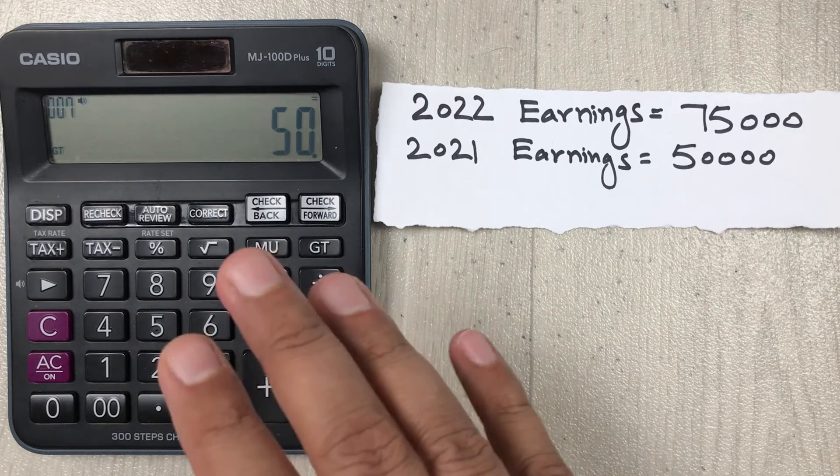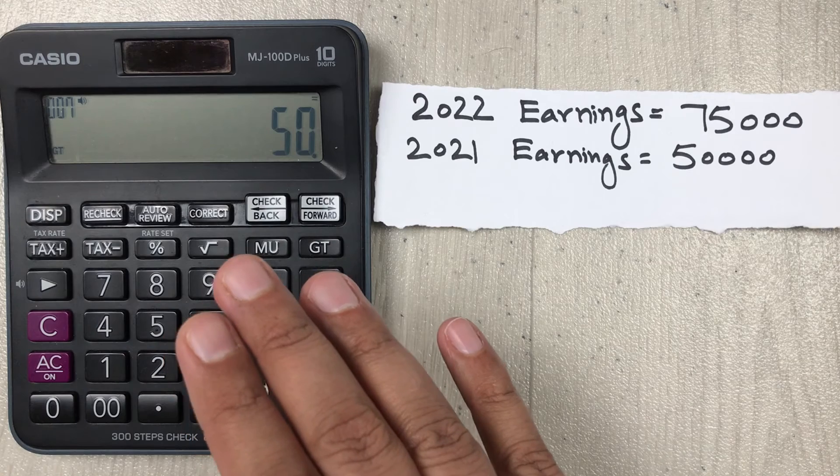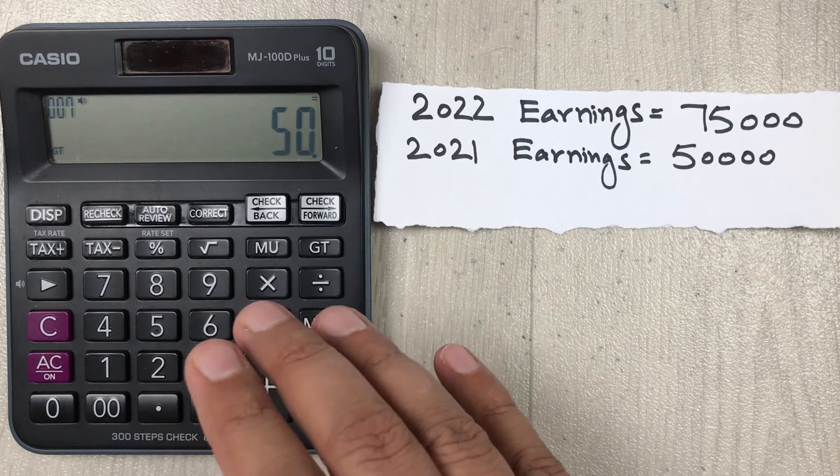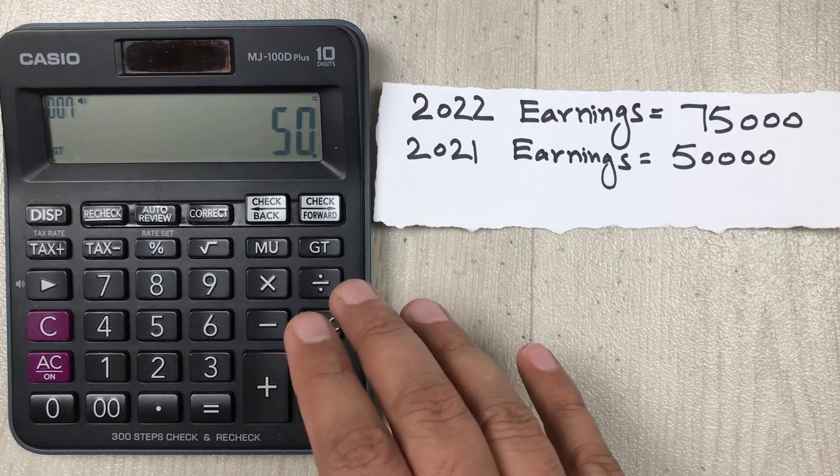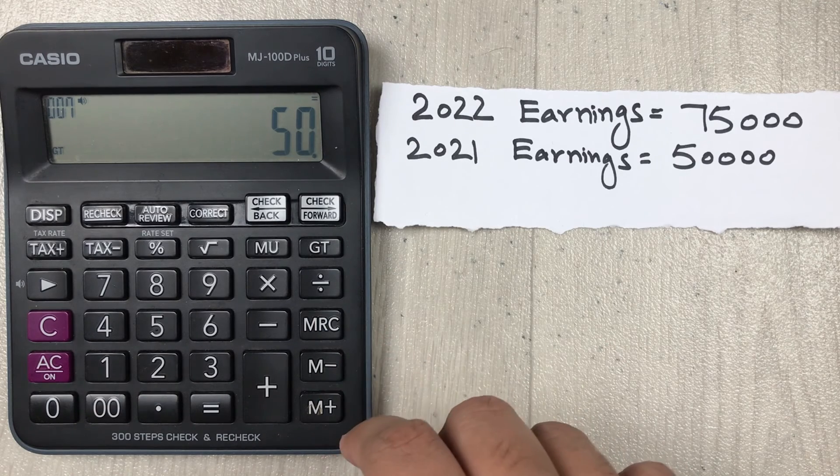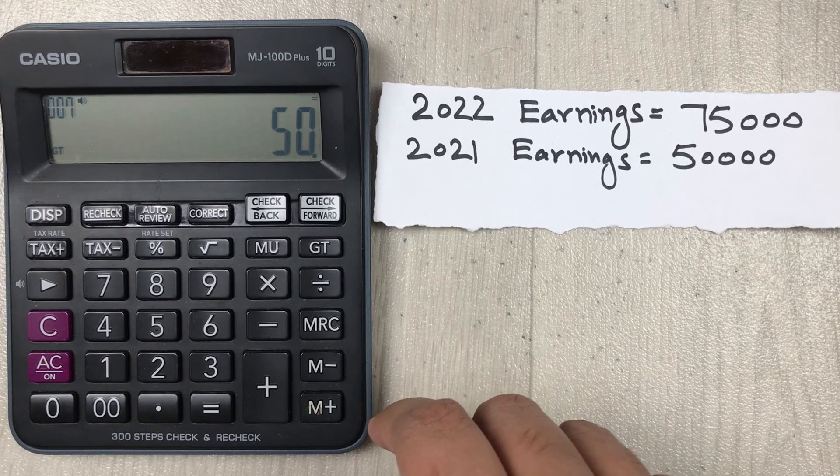So guys, here is our final answer: 50 percent is our year over year growth percentage. This is how you can find out the year over year growth percentage on your simple calculator. This is for today's video, I hope you liked the video, I hope you enjoyed the video, so please subscribe to my channel. Thank you very much.